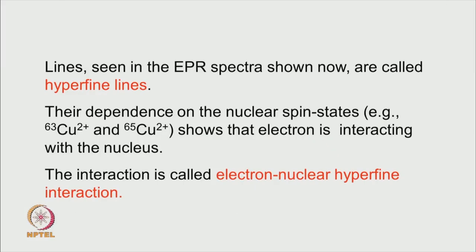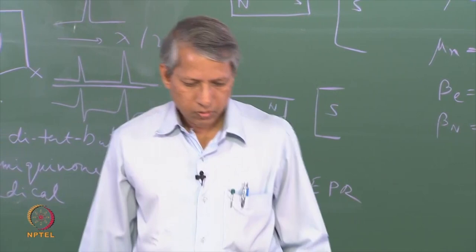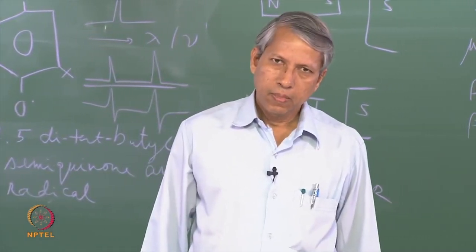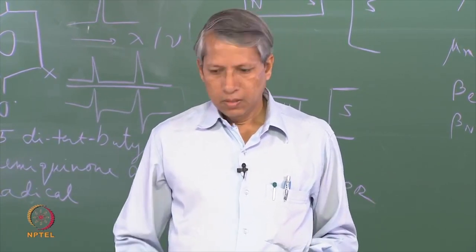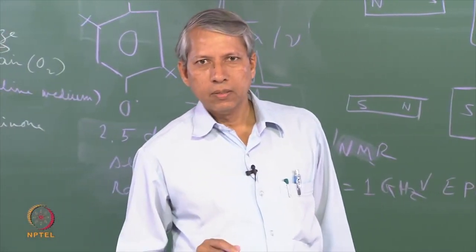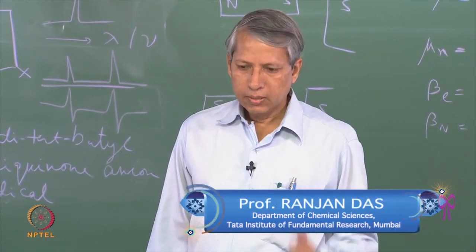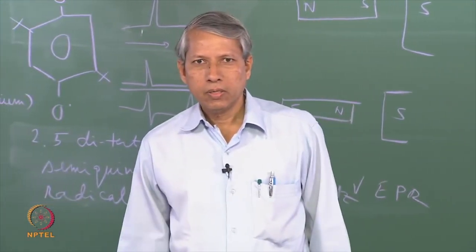This must have something to do with the interaction of the unpaired electron with the nucleus — this interaction is called the electron-nuclear hyperfine interaction. To summarize: EPR spectroscopy gives many lines in general, and their characteristics depend on the nucleus present and the type of radical. From this we can learn a great deal about the structure of the radical or the electronic structure of transition metal complexes. Most importantly, it is the hyperfine lines arising from the interaction of the electron with the nucleus that is the key finding of today's lecture.